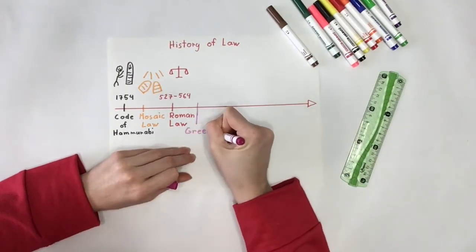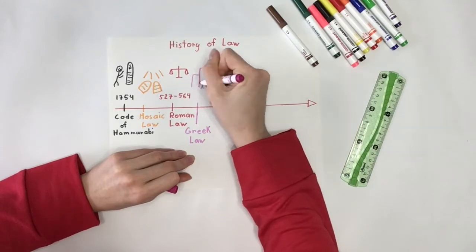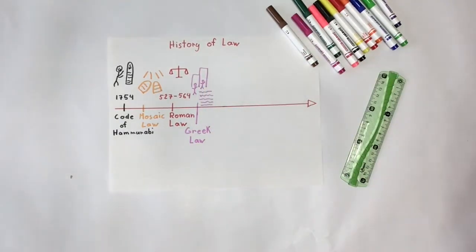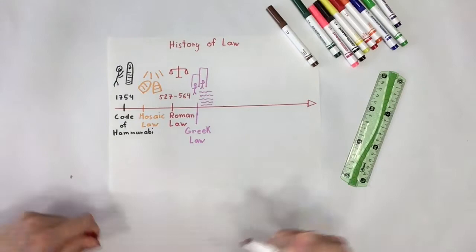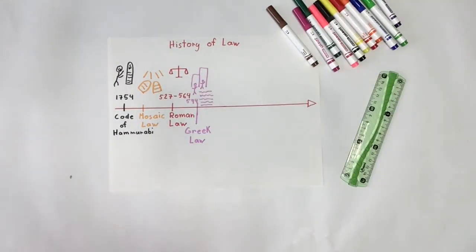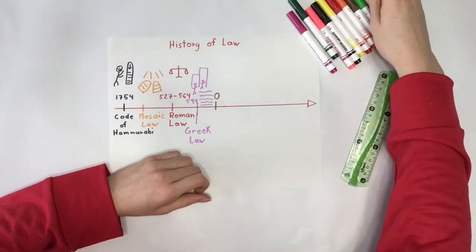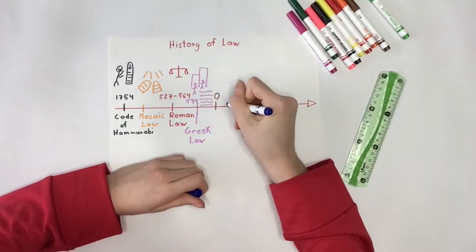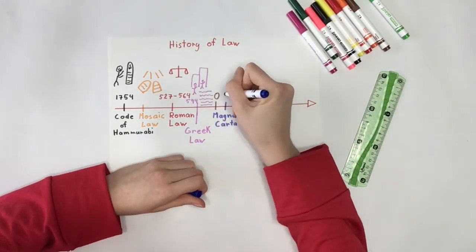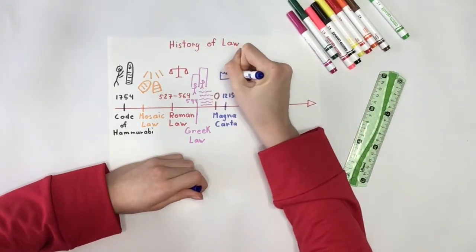It was shortly after this time that Greek law was written. Greek law focused largely on having procedures in the law process. Closer to the roots of our modern Canadian law is the Magna Carta, which originated in England during the 1200s. It took some of the power away from kings and gave more to the people, challenging the idea of the divine right of kings.